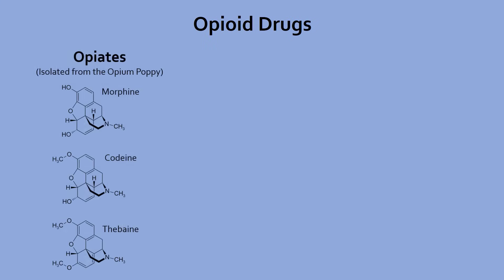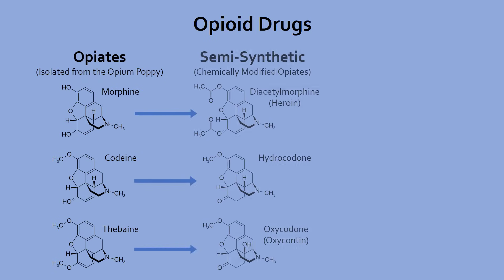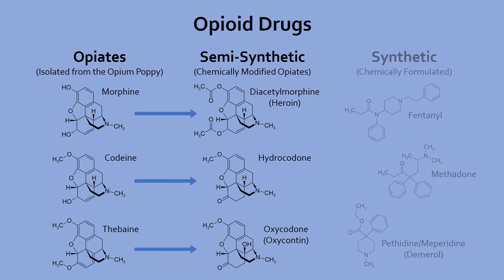Opioid drugs include a wide range of drugs that can be classified as opiates, which are drugs derived from the opium poppy; semi-synthetic opioids that are made from chemically modifying opiates; and fully synthetic opioids. All of these drugs work in pretty much the same way, with just slight differences that you can read more about in the video description below.